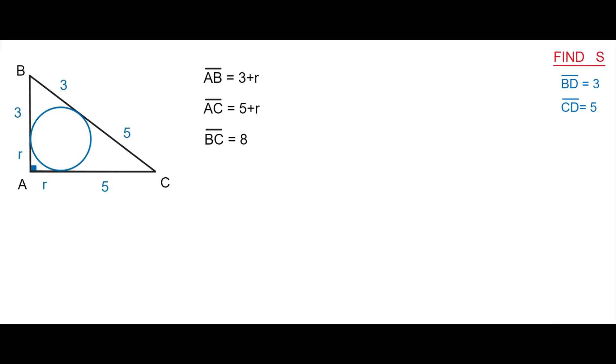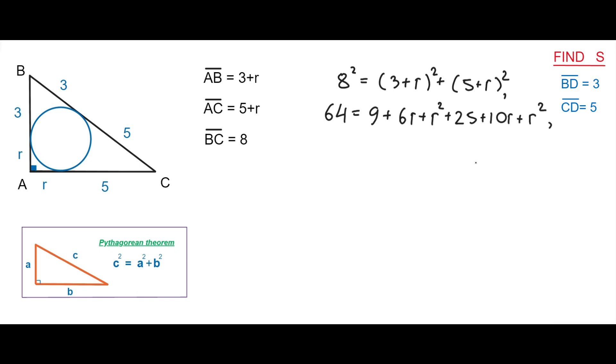Here we can use the Pythagorean theorem to find R. 8 squared equals 3 plus R squared plus 5 plus R squared. Solving this quadratic equation we get R equals square root of 31 minus 4. So the segment AB equals square root of 31 minus 1, and the segment AC equals square root of 31 plus 1.